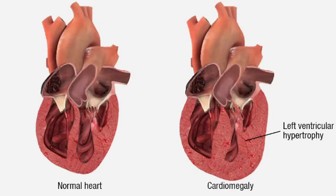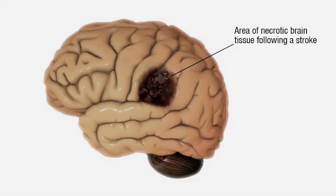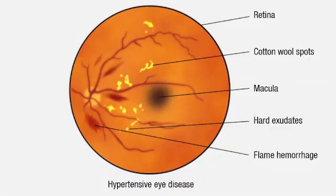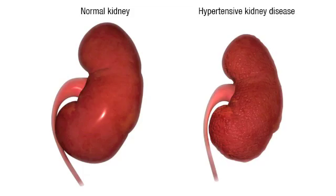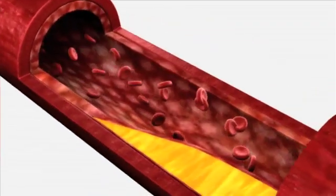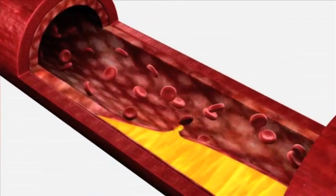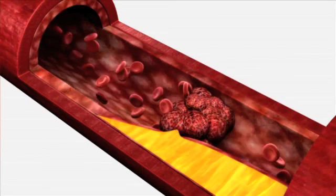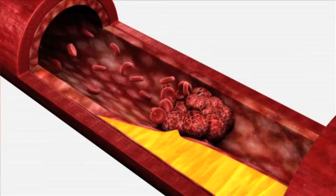Uncontrolled hypertension leads to significant systemic complications including cardiomegaly from left ventricular hypertrophy, cerebrovascular diseases such as stroke, hypertensive retinopathy, and hypertensive nephropathy. Hypertension is also a risk factor for accelerated atherosclerosis, leading to angina and myocardial infarction.